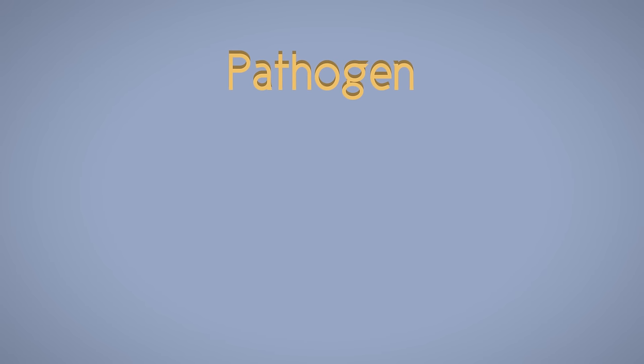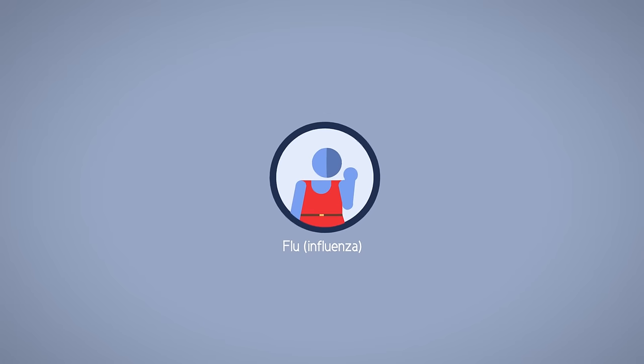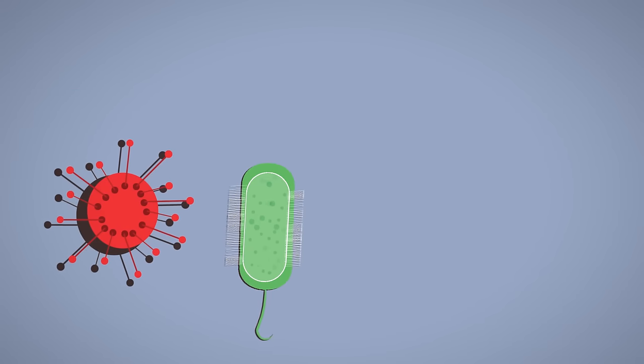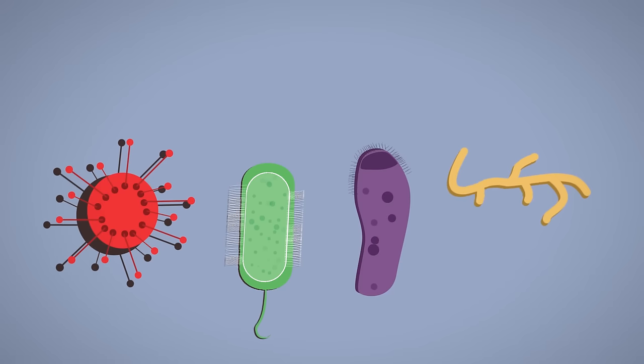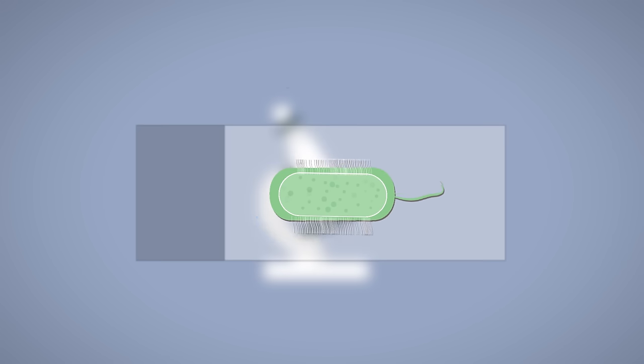A pathogen is a microorganism that can cause disease. In this video, we are going to discover what they are, how they can spread and cause infection, and how their spread can be reduced or prevented. Pathogens may be viruses, bacteria, protists, or fungi.